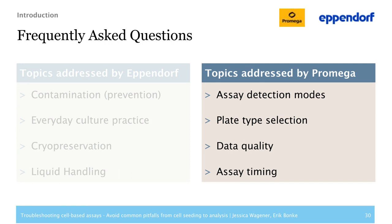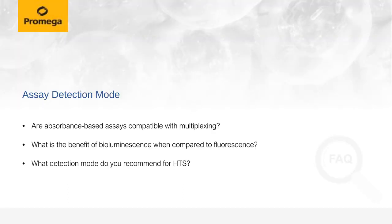In this next section, we will focus on the last part of the workflow — where we use cells in an experimental setting, a so-called cell-based assay. The first area I would like to talk about is the assay detection mode. Questions we received include: Are absorbance-based assays compatible with multiplexing? What is the benefit of bioluminescence compared to fluorescence? And what detection mode do you recommend for HTS or high-throughput screening?